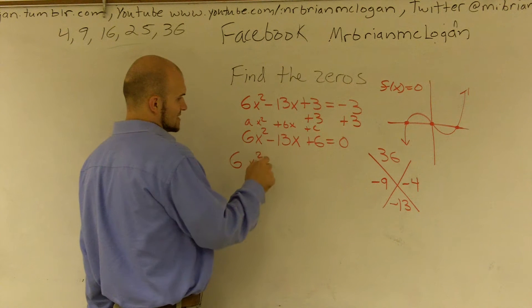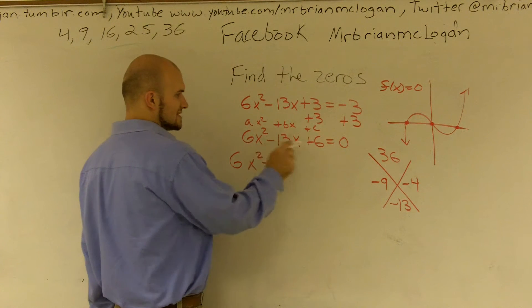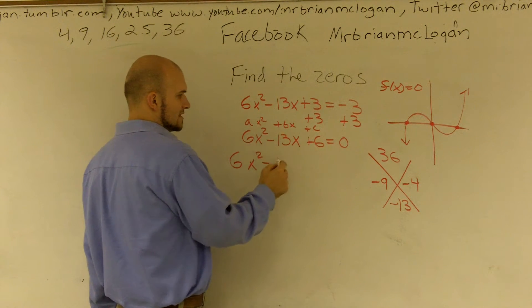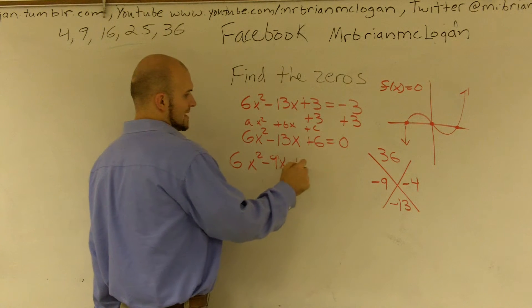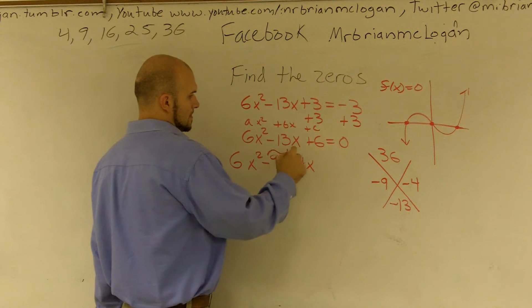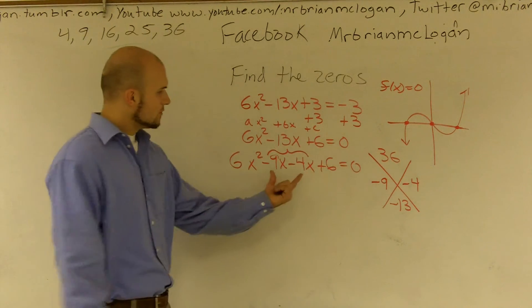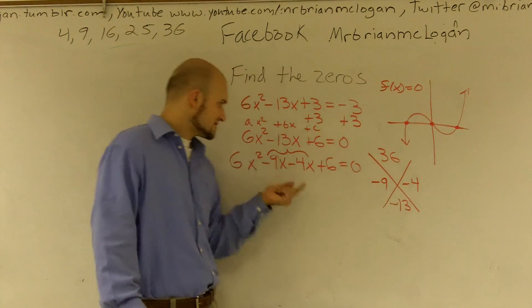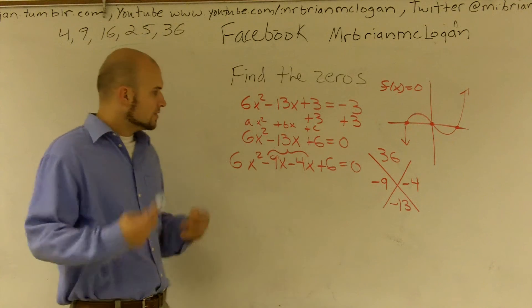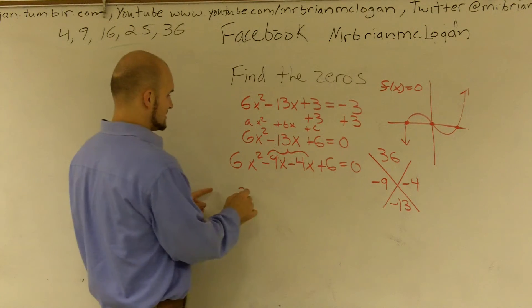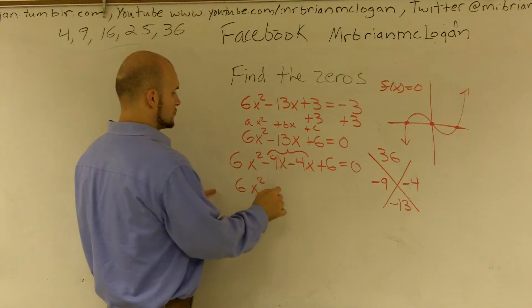So then what I'm going to do is I'm going to rewrite this as 6x squared minus, instead of writing this 13x, I'm going to write it like 9x minus 4x plus 6 equals zero. Notice how I rewrote this - these two factors still equal my middle term. But the reason why I want to write this like this is because now I can factor by grouping.